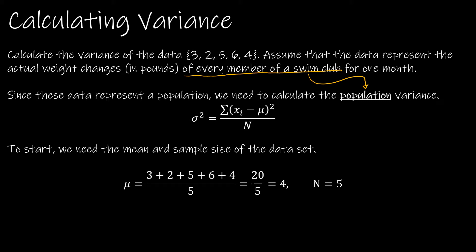First I'm going to find the mean, mu. The mean is: add up all the values and divide by how many values there are. There are five values, so mu equals 4 and n equals 5.